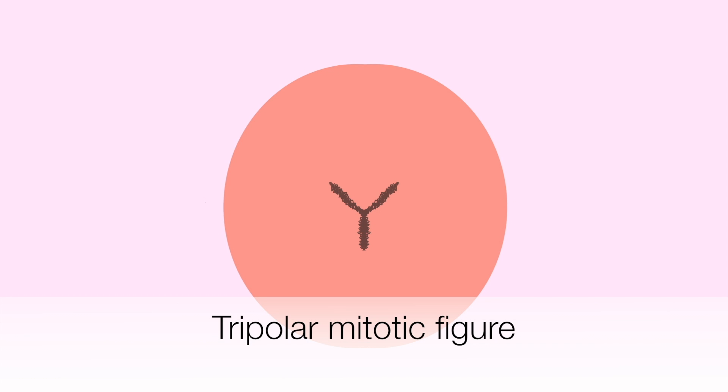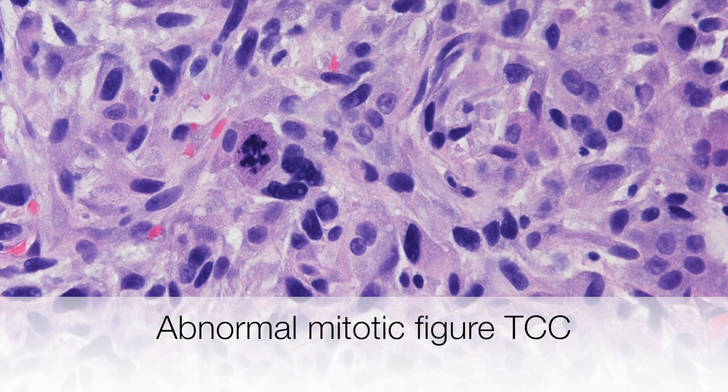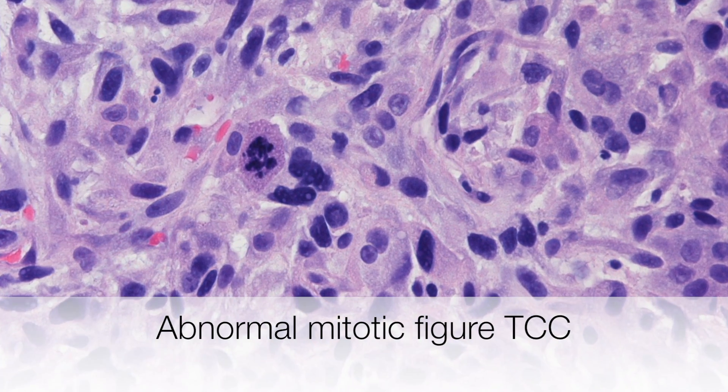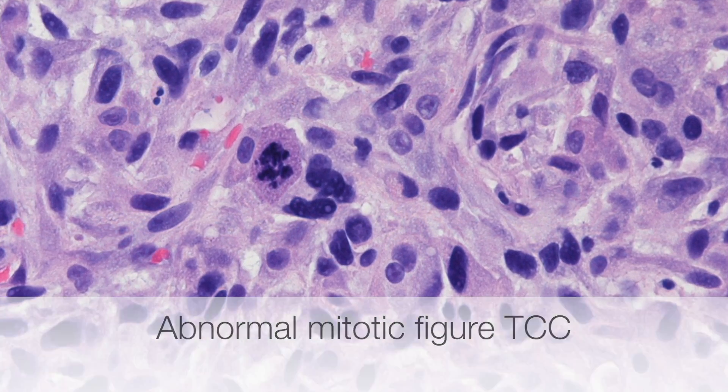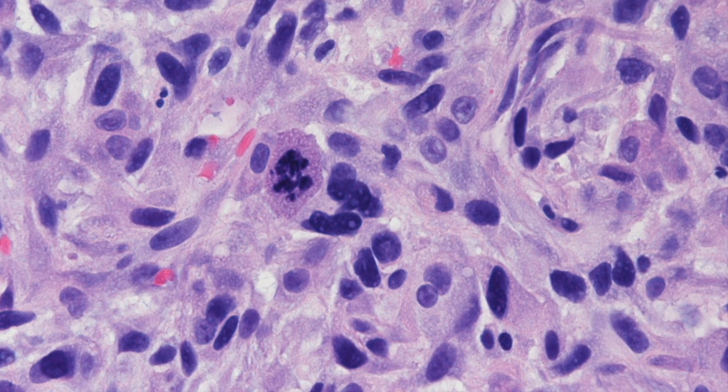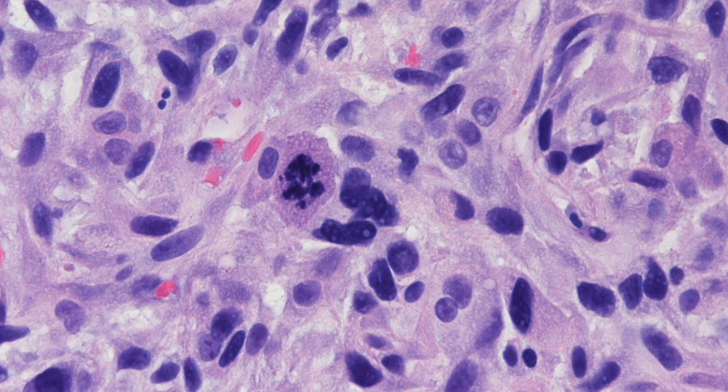This is a very simple illustration of a typical abnormal mitotic figure. This is a tripolar mitotic figure that you often see in malignant tumours. Here is a good example of an abnormal mitotic figure in a high grade transitional cell carcinoma of the bladder.